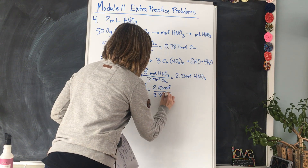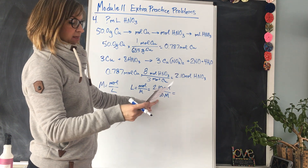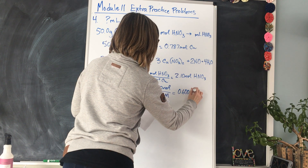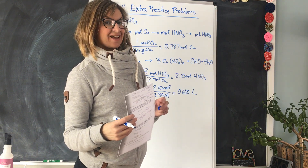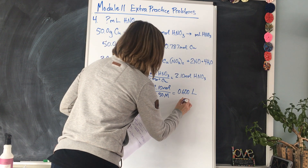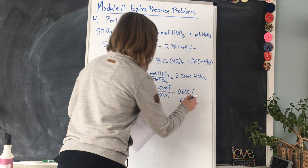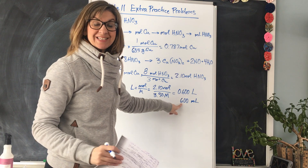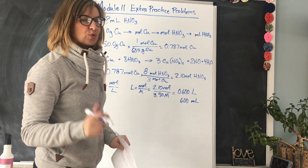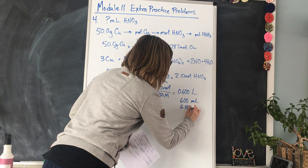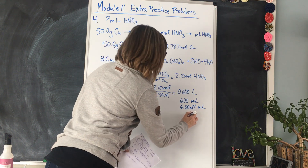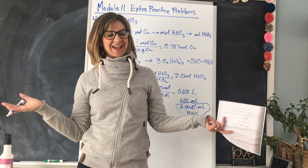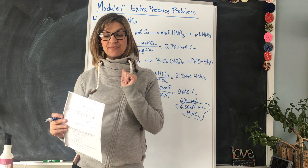2.10 divided by 3.50 equals 0.600 liters, which converts to 600 milliliters. But that's only one significant figure and we need three, so we write this in scientific notation: 6.00 × 10² milliliters of HNO3 must be used. That is how you do number 4.